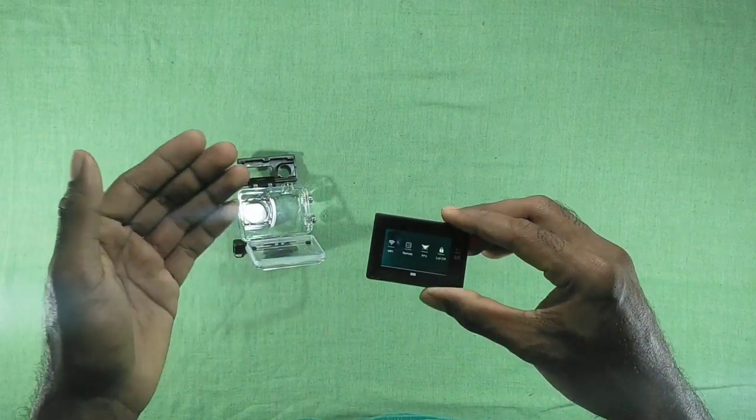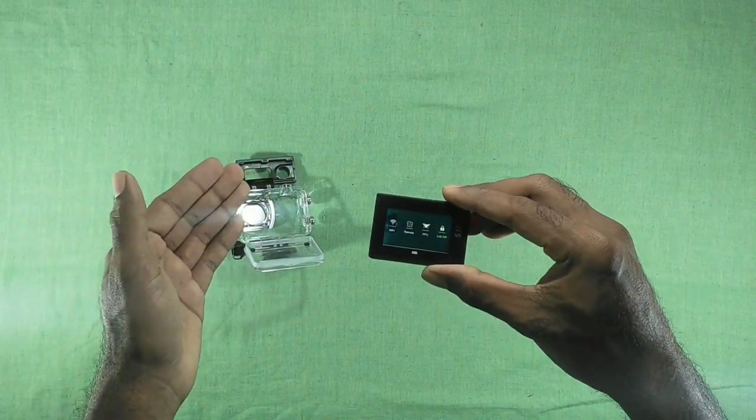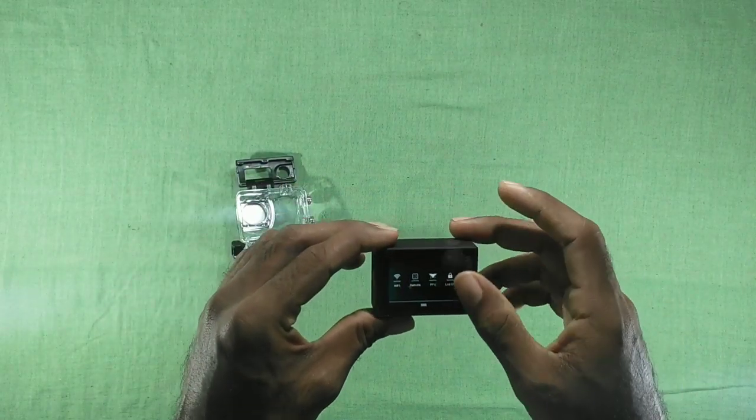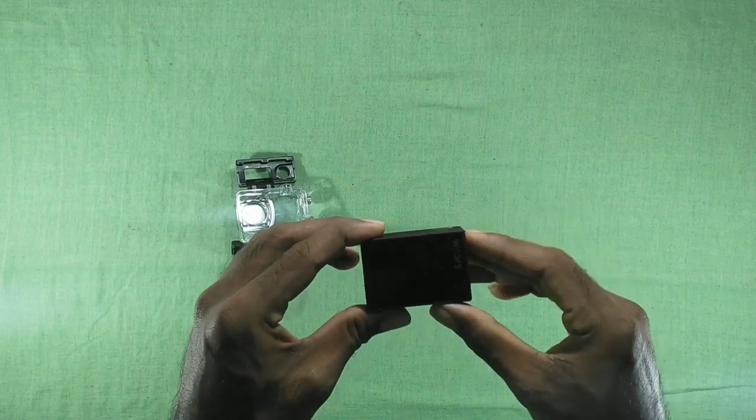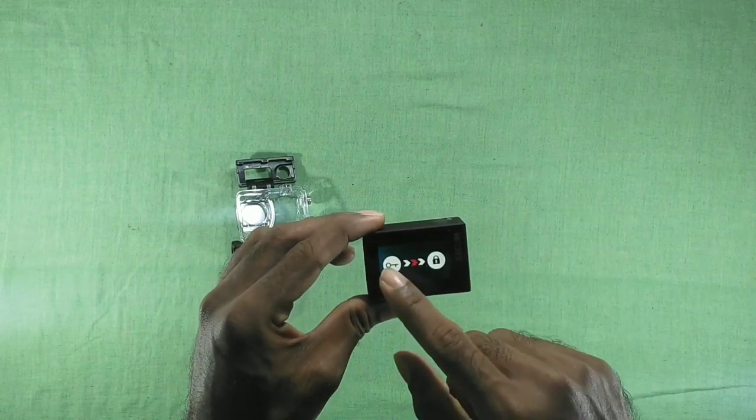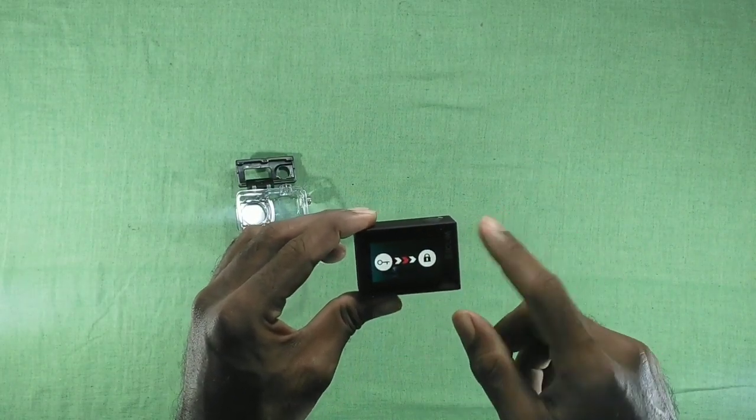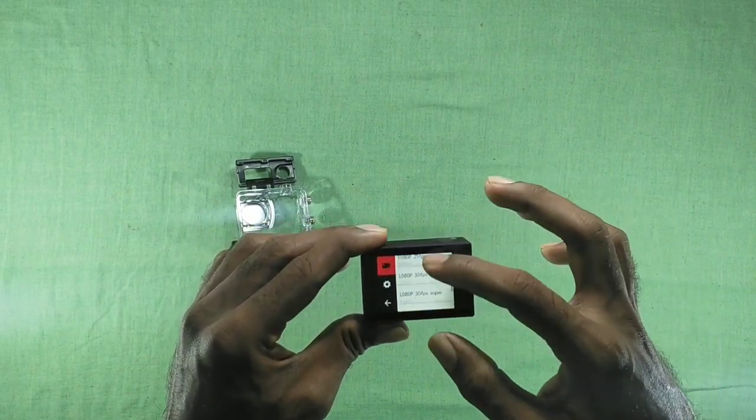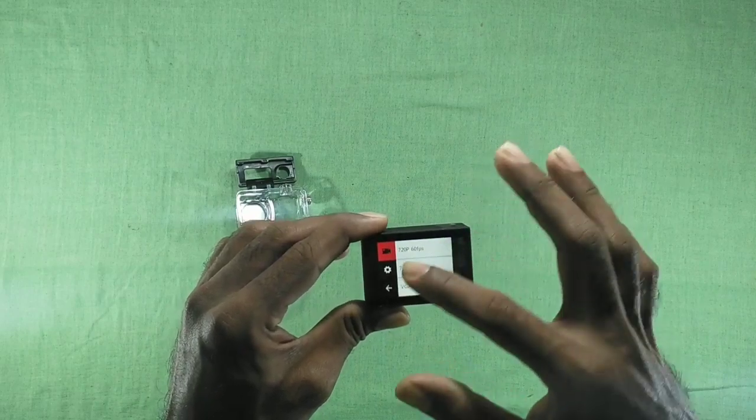It also has an option to lock the LCD. When we click it, the LCD completely turns off, and when we're turning it on, it asks us to swipe the screen so that we can unlock the screen. Very good feature. Now we will go to the resolutions and settings.